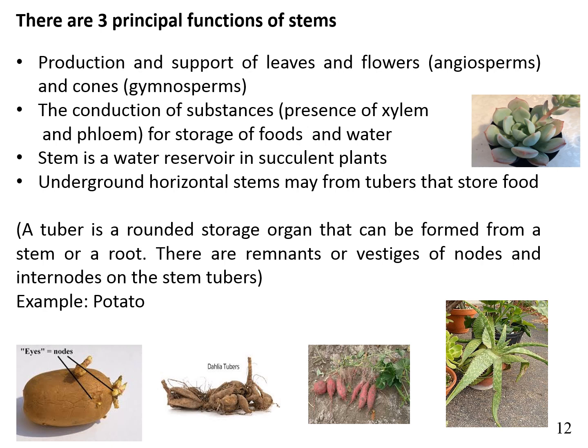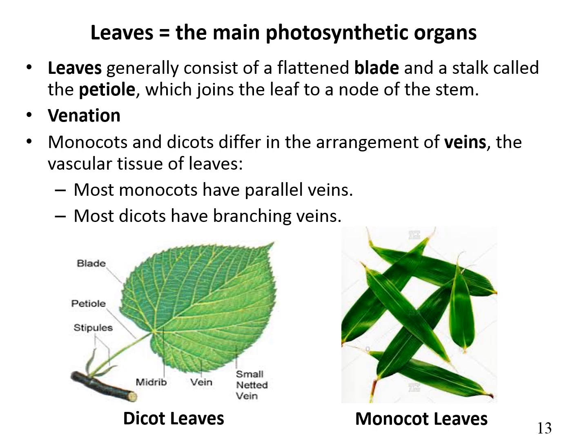The stem sometimes also acts as a water reservoir, in the case of succulent plants. For example, an underground horizontal stem may form a tuber that stores food. A tuber is a rounded storage organ that can form from a stem or root. If you look at the lower left picture, you can find small remnants or outgrowths of nodes and internodes on the stem tuber. An example of a stem tuber is the potato.